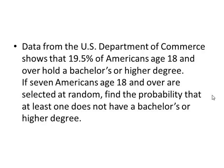Data from the U.S. Department of Commerce shows 19.5% of Americans age 18 and over hold a bachelor's or higher degree. If seven Americans over 18 are selected at random, find the probability at least one does not have a bachelor's or higher degree. At least one does not have a degree. At least one is x is greater than or equal to one. At least one out of seven, that's our value for n. And we're told to find the probability that at least one does not have a bachelor's degree, but here the 19.5% is the percentage that do.